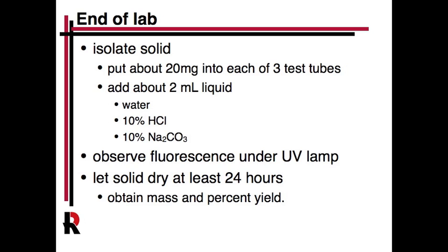The lab itself is pretty straightforward. At the end we'll isolate the solid, put about 20 mg into each of three test tubes, and while it's still wet you can add it. We're going to have three different test tubes with three different solutions: one water, one 10% HCl, and one 10% sodium carbonate, so you'll see the pH dependence. You may have to speculate in the post-lab on why a change in pH can result in different colors. Then we'll have a UV lamp for you to see the fluorescence.